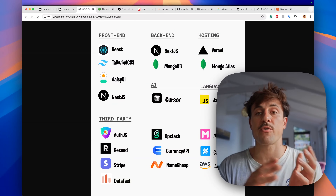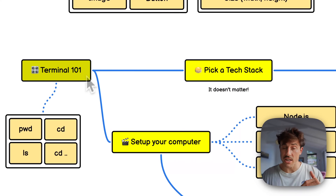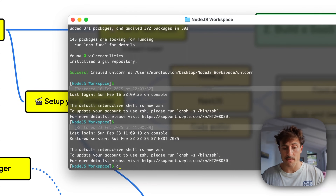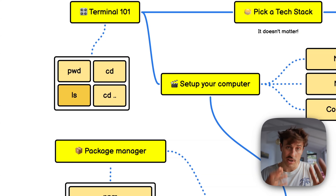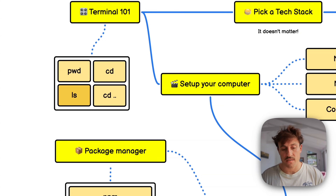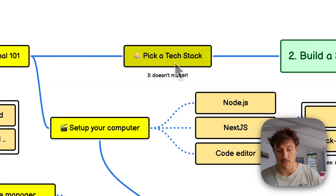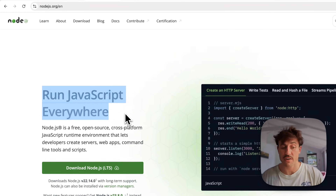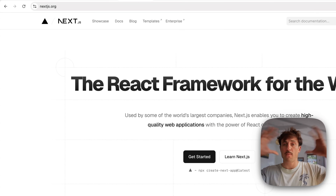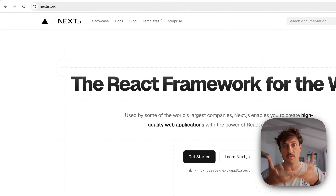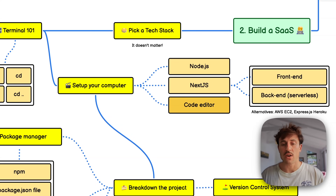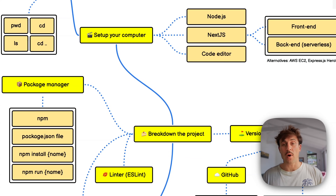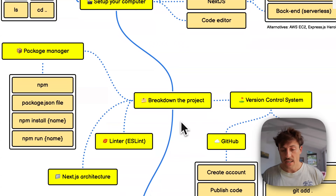Once you have your tech stack, get a little comfortable with the terminal. There are four commands important to know as a developer — ask ChatGPT to explain what the terminal is and how to use it. Then set up your computer: install Node.js so you can run JavaScript everywhere, install Next.js, a framework that compiles and combines all your pages to serve to the client, and set up your code editor. At this point you'll have an entire project up and running.